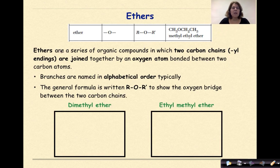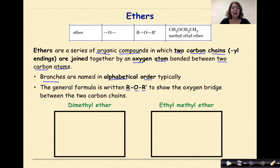Let's start by talking about ethers. Ethers are a series of compounds in which two carbon chains with a -yl ending are joined together by an oxygen atom bonded between two carbon atoms. Branches are named in alphabetical order. The general formula is written ROR' to show the oxygen bridge between the two carbon atoms. From the reference table, the functional group is ether, represented as -O-, followed by the first hydrocarbon group, then the second hydrocarbon group — for example, methyl ethyl ether in condensed structural formula.